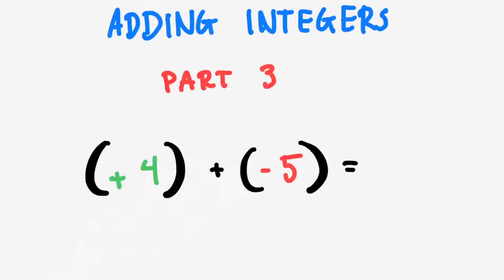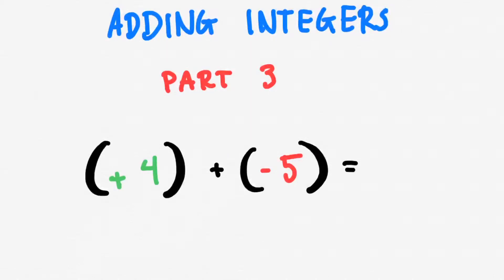Welcome to the third part of this three-video series on adding integers. The first two methods dealt with visual representations of adding integers. In this third video I want to show you the more abstract way, where you're just using a piece of paper and a pencil and going straight for the answer. This is what I do in my head when I add integers, and hopefully this is something you can do in your head as well by the end of the video, or at least after a fair amount of practice.